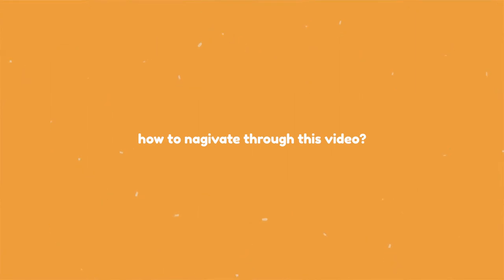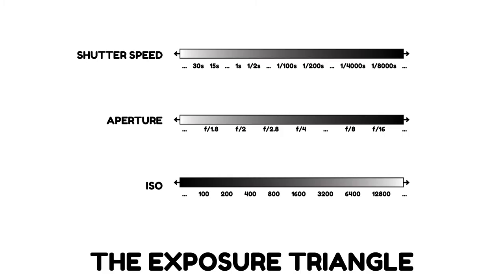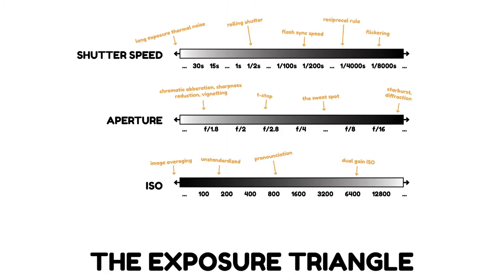It's important to understand what the exposure triangle is. As the name suggests, it's the three values that pretty much influence your exposure — and many other things. It's the many other things that it also affects that makes it so freaking complicated, which is why this video is so long. It's okay if you don't want to watch the entire video; you can find timestamps in the little play bar and in the description down below.